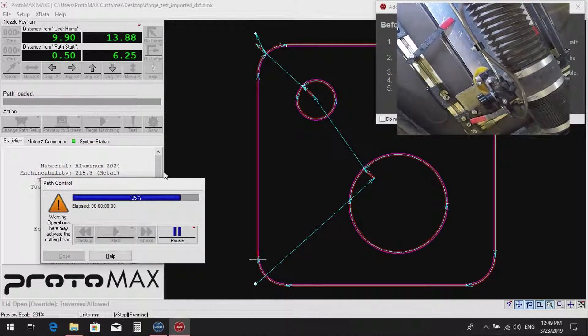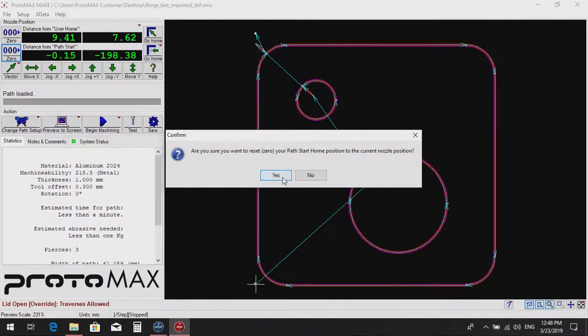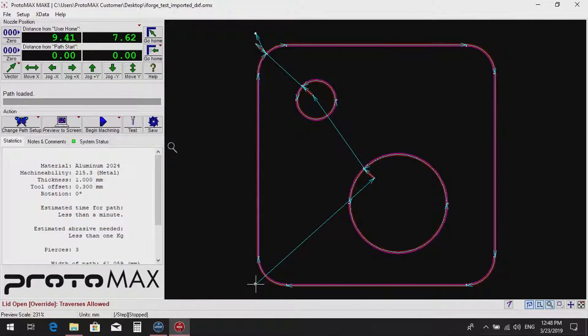Watch out for any collisions, check sizes and check that the part fits on the material. Move the nozzle to the start location and set path start to zero.